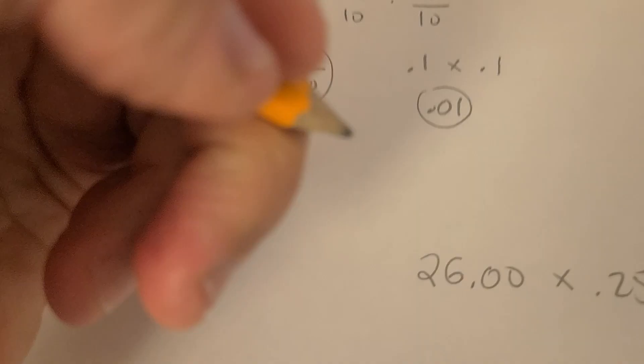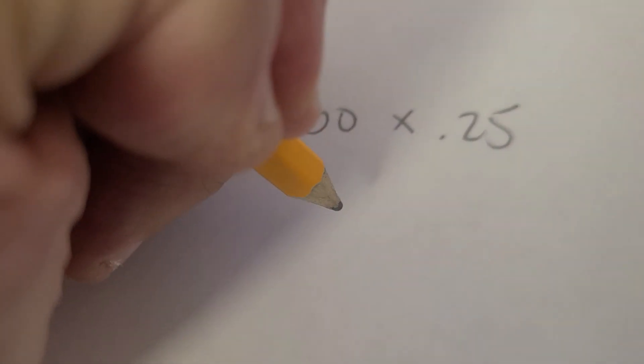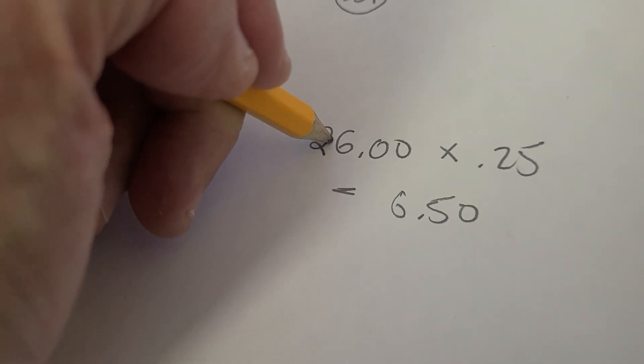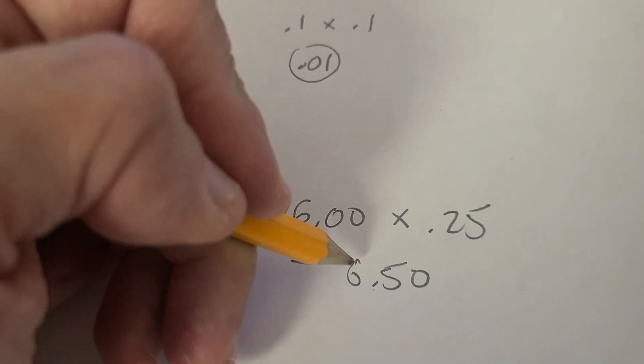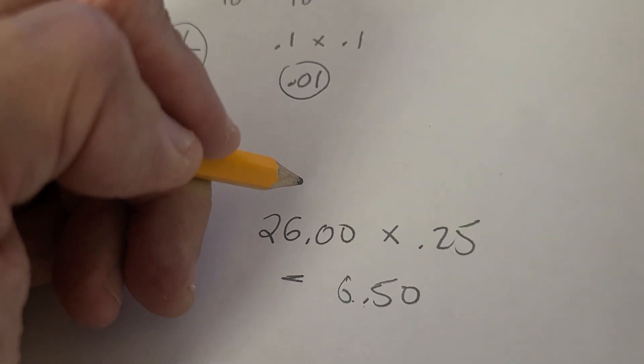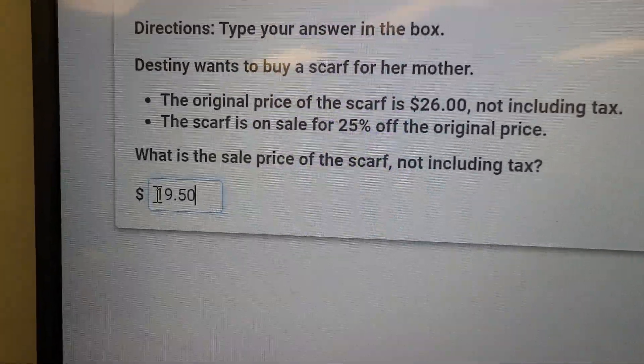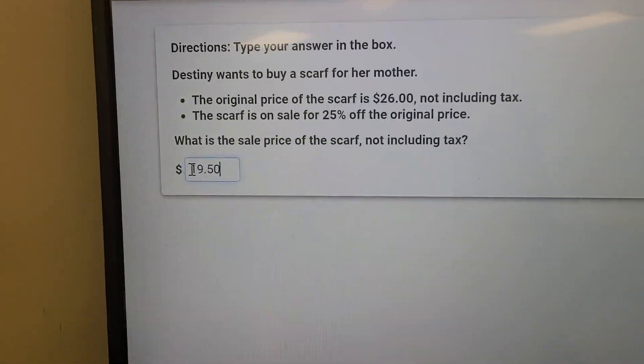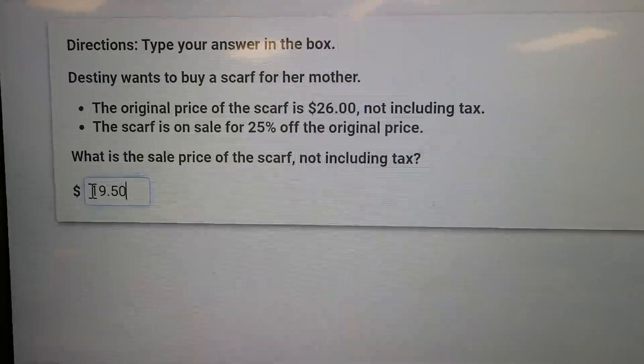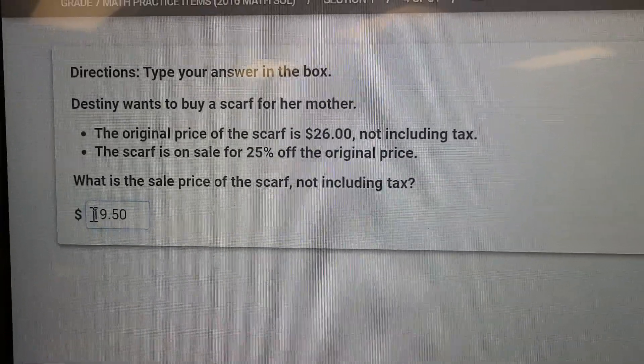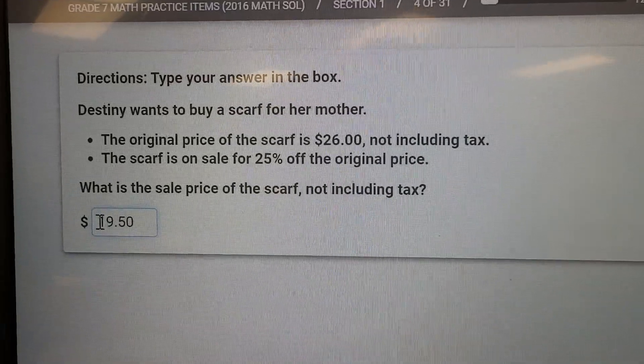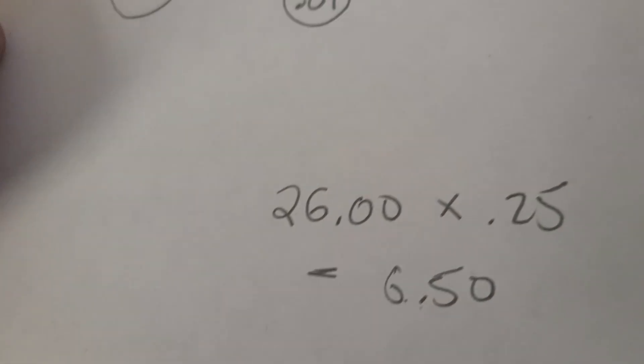I'm going to write $6.50, but I want the discount, so I must subtract: 26 minus 6.50 equals $19.50. Now up here, I can close my calculator. I'm going to type in 19.50. It's money, so please put in the zero. Now I'm not going to hit next yet. I'm going to just look at it one more time.